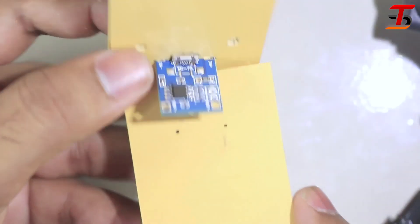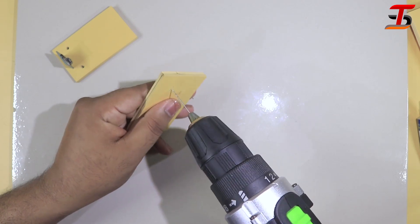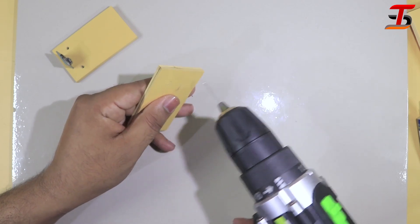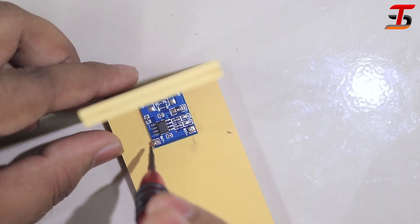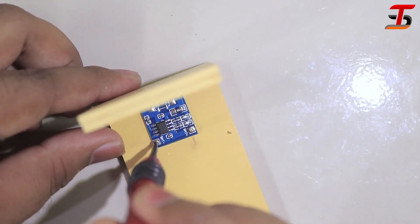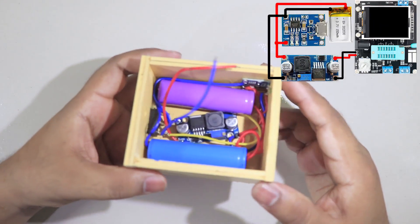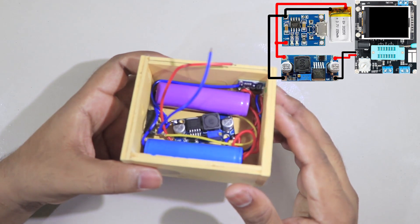To join this module by screw, I drill two holes. Here I complete the simple connection, you can see on the display.